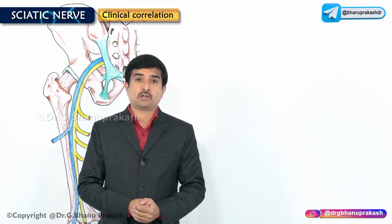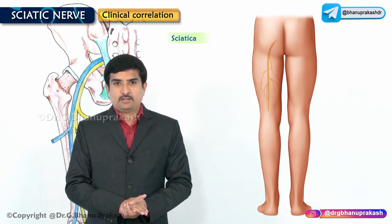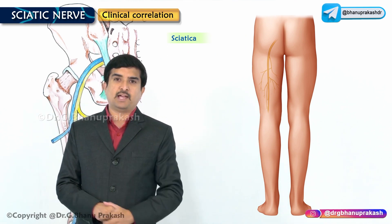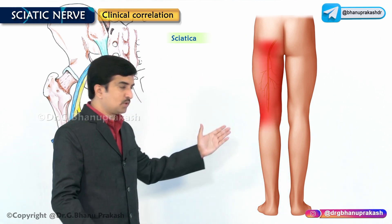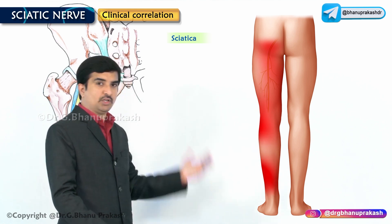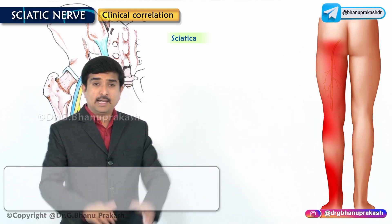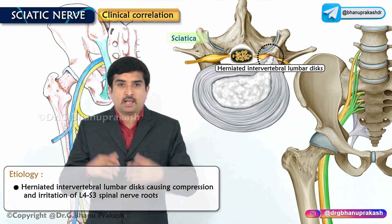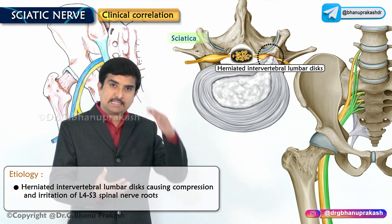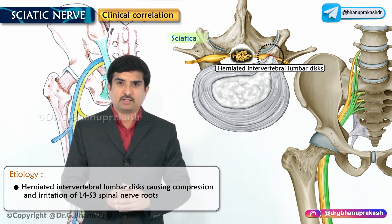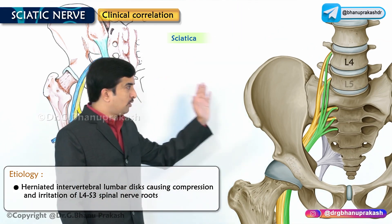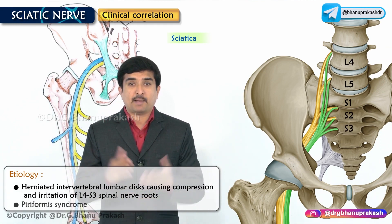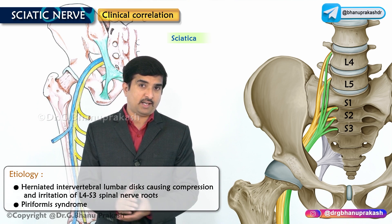Sciatica is a clinical condition characterized by shooting pain felt along the course and distribution of the sciatic nerve. It occurs mainly due to herniated intervertebral lumbar discs causing compression and irritation of the spinal nerve roots from L4 to S3, and is also seen in piriformis syndrome.